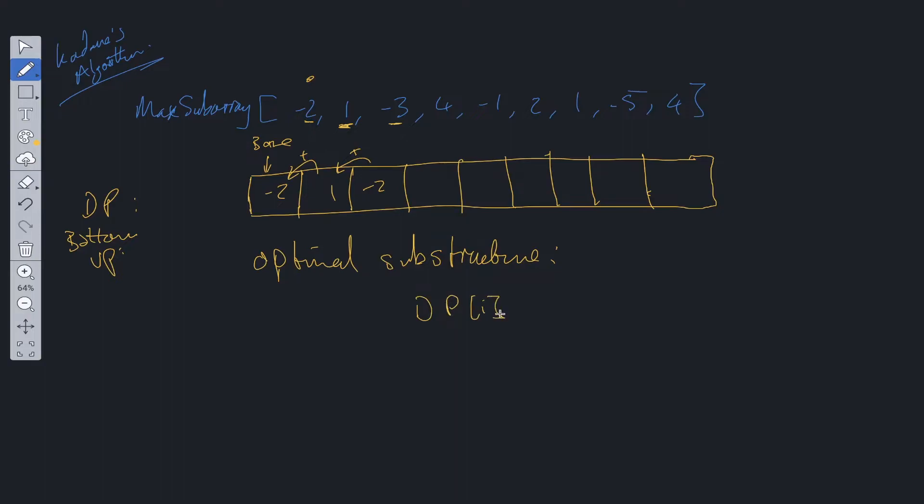So DP at i is going to be equal to the maximum between the current value we're on, so we'll call it max sub at i plus the previous value, so plus DP i minus 1, or just the maximum sub value on its own. So this is the optimal substructure to this dynamic solution. So let's carry on.